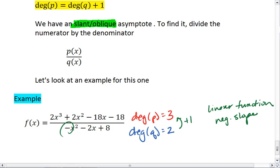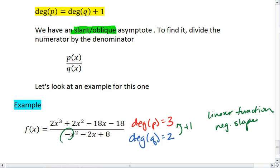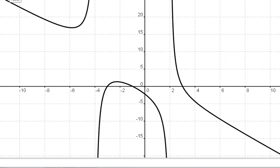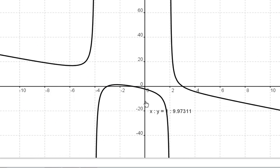But we can graph it and check if that's the case. Here's the graph of our function. And again, because we're looking at end behavior, we want to zoom out.